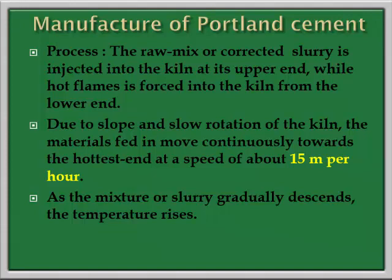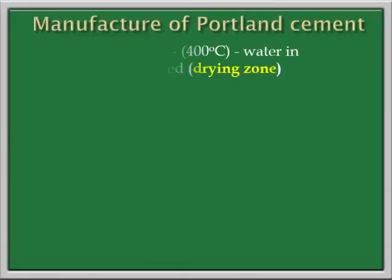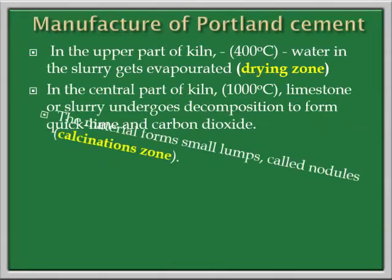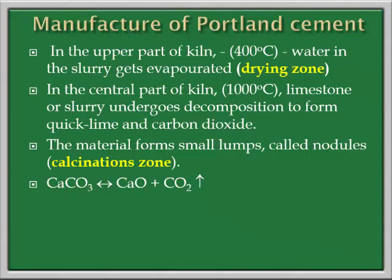Now we move to the process. The raw mixture obtained as a slurry is injected into the kiln from the upper end, while the hot flame is forced into the kiln from the lower end. Due to the slope and slight inclination, the materials move continuously towards the hottest end at a speed of about 15 meters per hour. As the mixture or slurry gradually descends, the temperature is increasing. In the upper part of the rotary kiln, the temperature is around 400 degree Celsius. This zone is also called the drying zone.